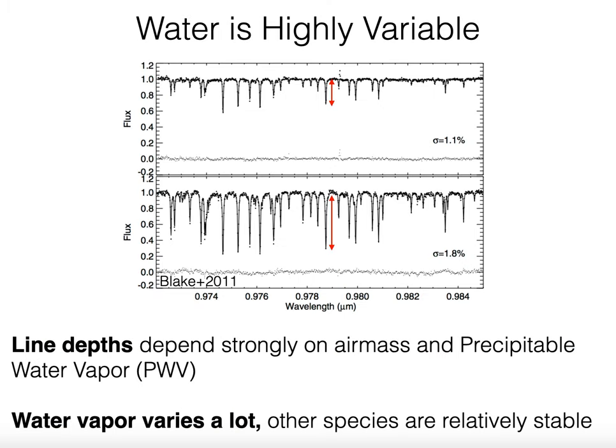The water vapor in our atmosphere changes all the time—some days are drier, some days are wetter—and as a result the absorption lines themselves are also changing in depth all the time. Here are two examples: observations of a hot featureless star, so you're only seeing the fingerprint of water absorption in our atmosphere. These two observations were taken relatively close in time, and you can just see with your eye that the amount of water vapor is changing a lot.